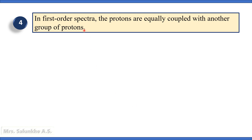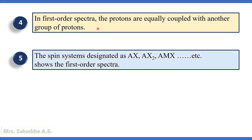The fourth criteria is that in first order spectra, the protons are equally coupled with another group of protons. The fifth criteria is that in first order spectra, the spin systems are designated as AX, AX2, AMX, etc. In the alphabet, the distance between A and X is greater, therefore their chemical shifts are considered to be different and such systems are designated like this.